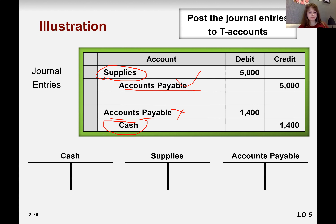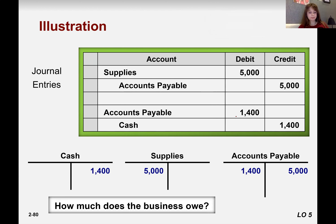In the first entry, supplies is debited and cash is credited — so you write supplies to accounts payable. In the second transaction, accounts payable is debited and cash is credited. So how much does the business owe?